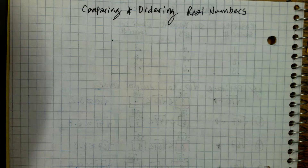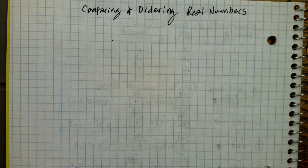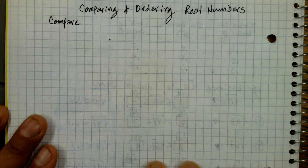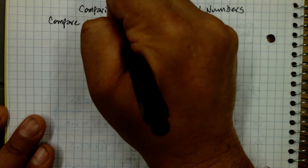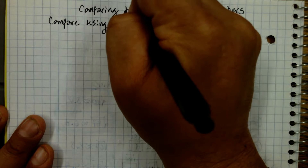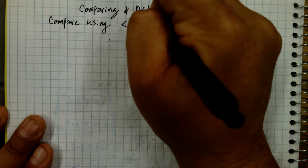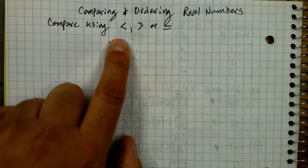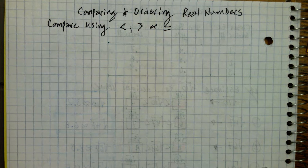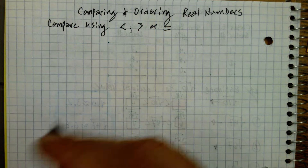So, comparing and ordering real numbers. The first thing we're going to do is compare some numbers. Write this down, please. We're going to compare using either the less than sign, greater than sign, or equal — one of those. So here's an example.